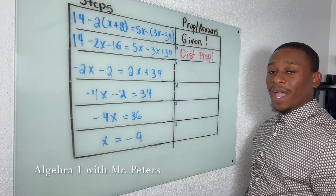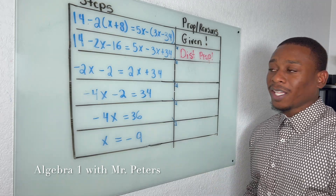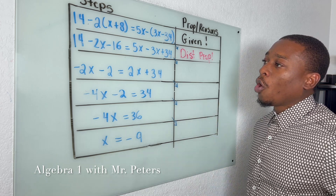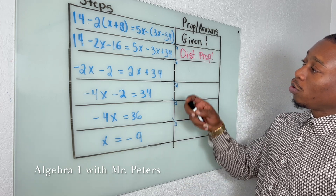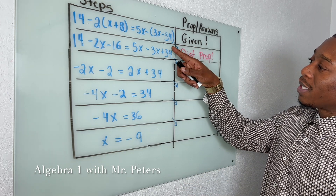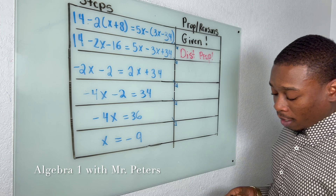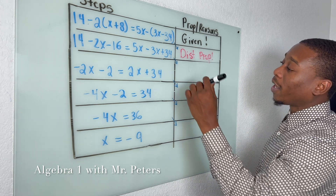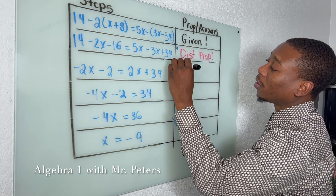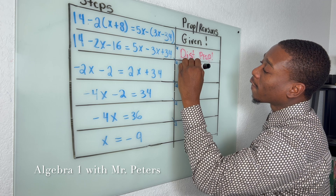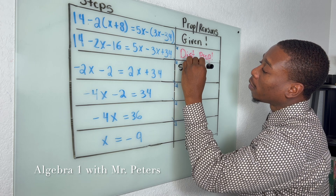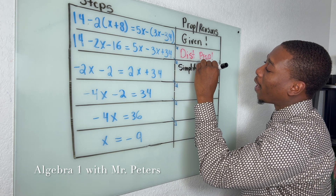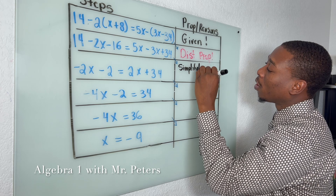In the second reason, we're talking about what they did from this line to get to this line. And we should already know that all they did was simplify — or we could say combine like terms.